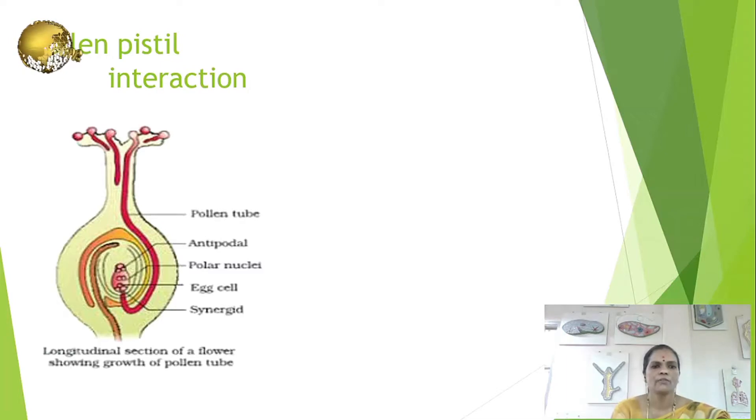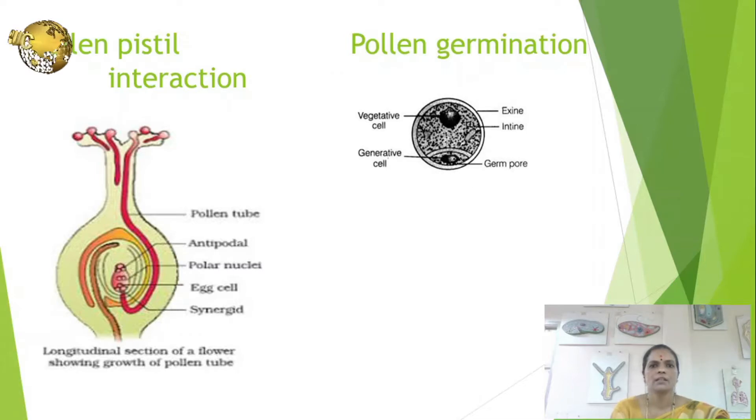To know the pollen germination, we should know about the structure of the pollen grain. A mature pollen grain consists of concentric wall layers as outer exine and inner intine. Exine is sporopollinic and is a discontinuous layer due to the presence of one or more germ pores. The intine is made up of pectin and cellulose.